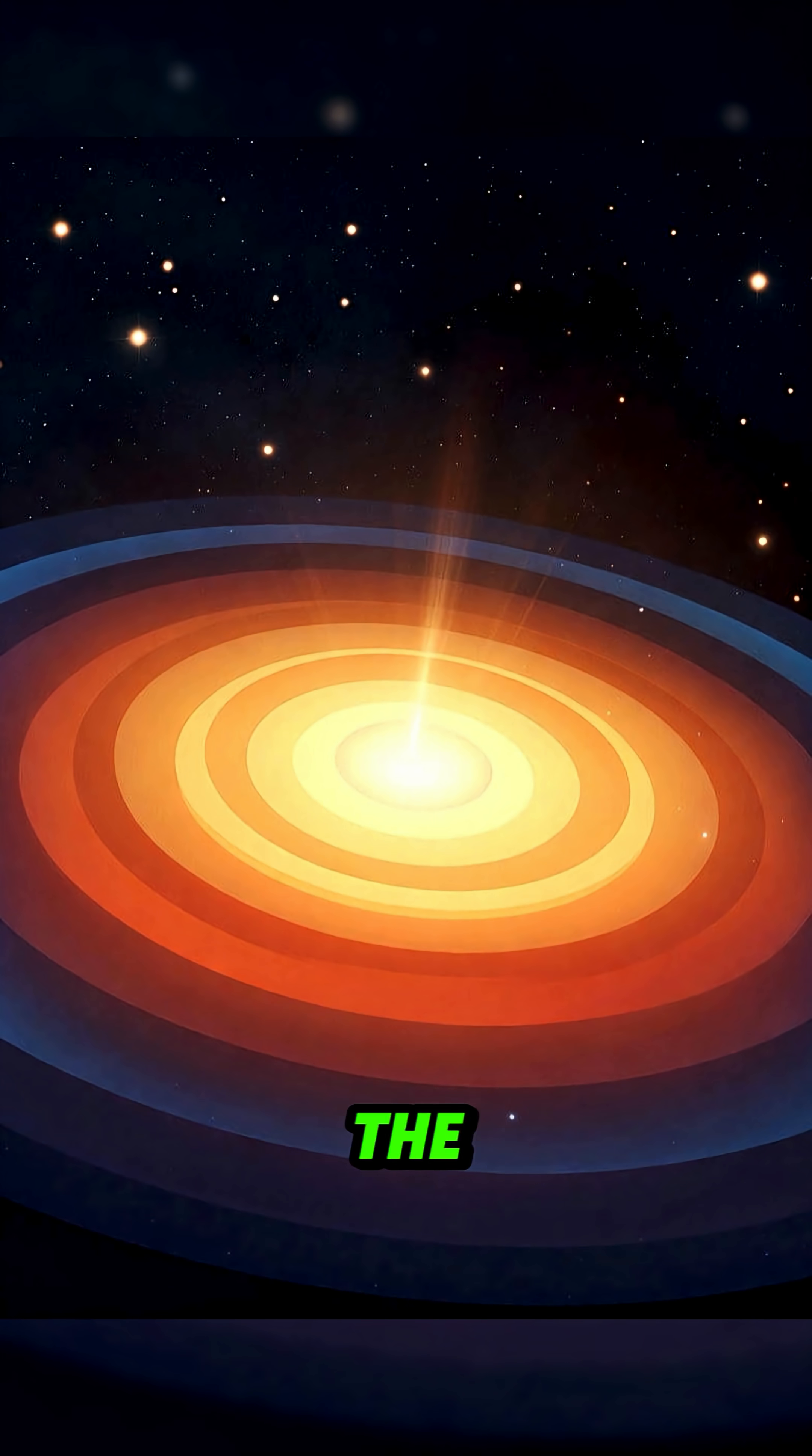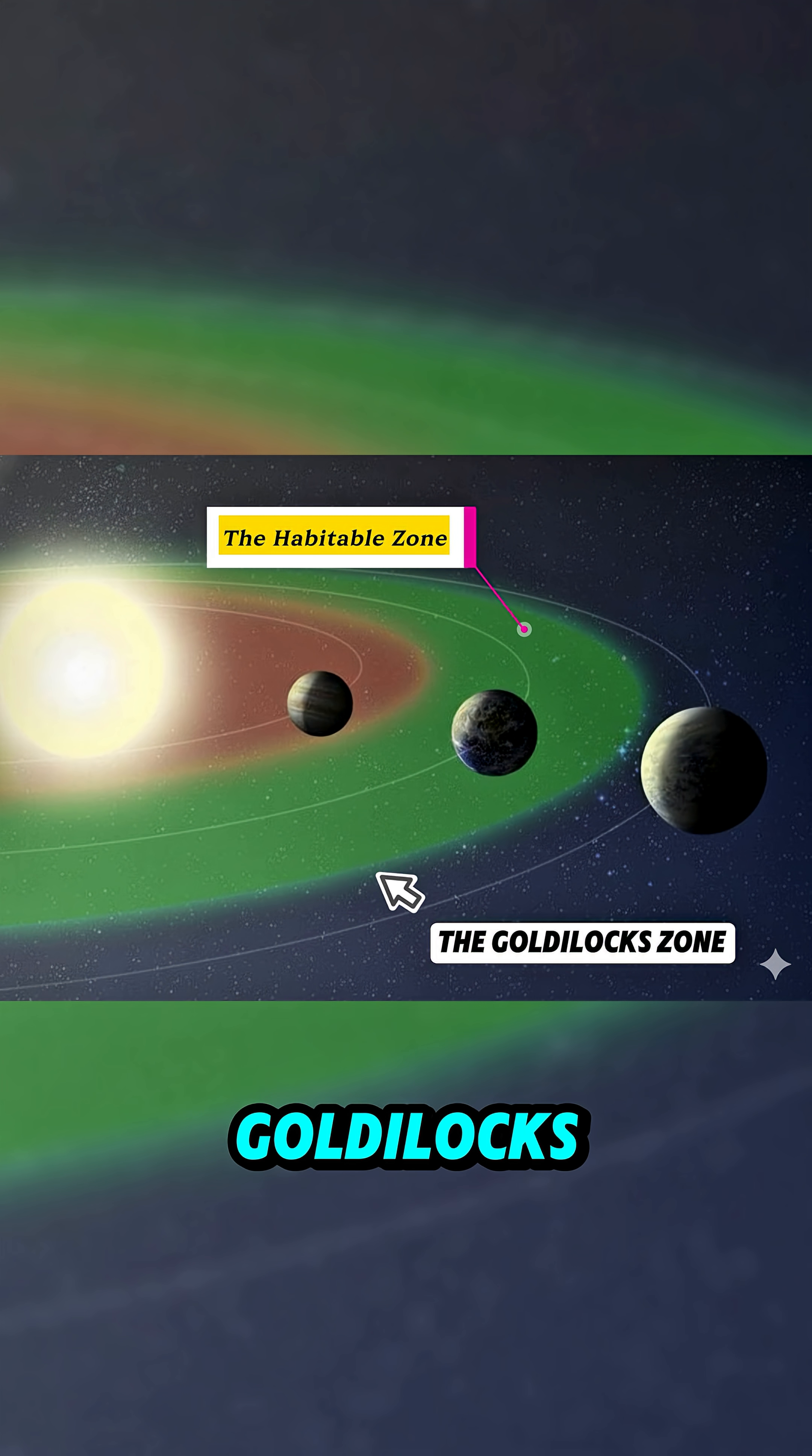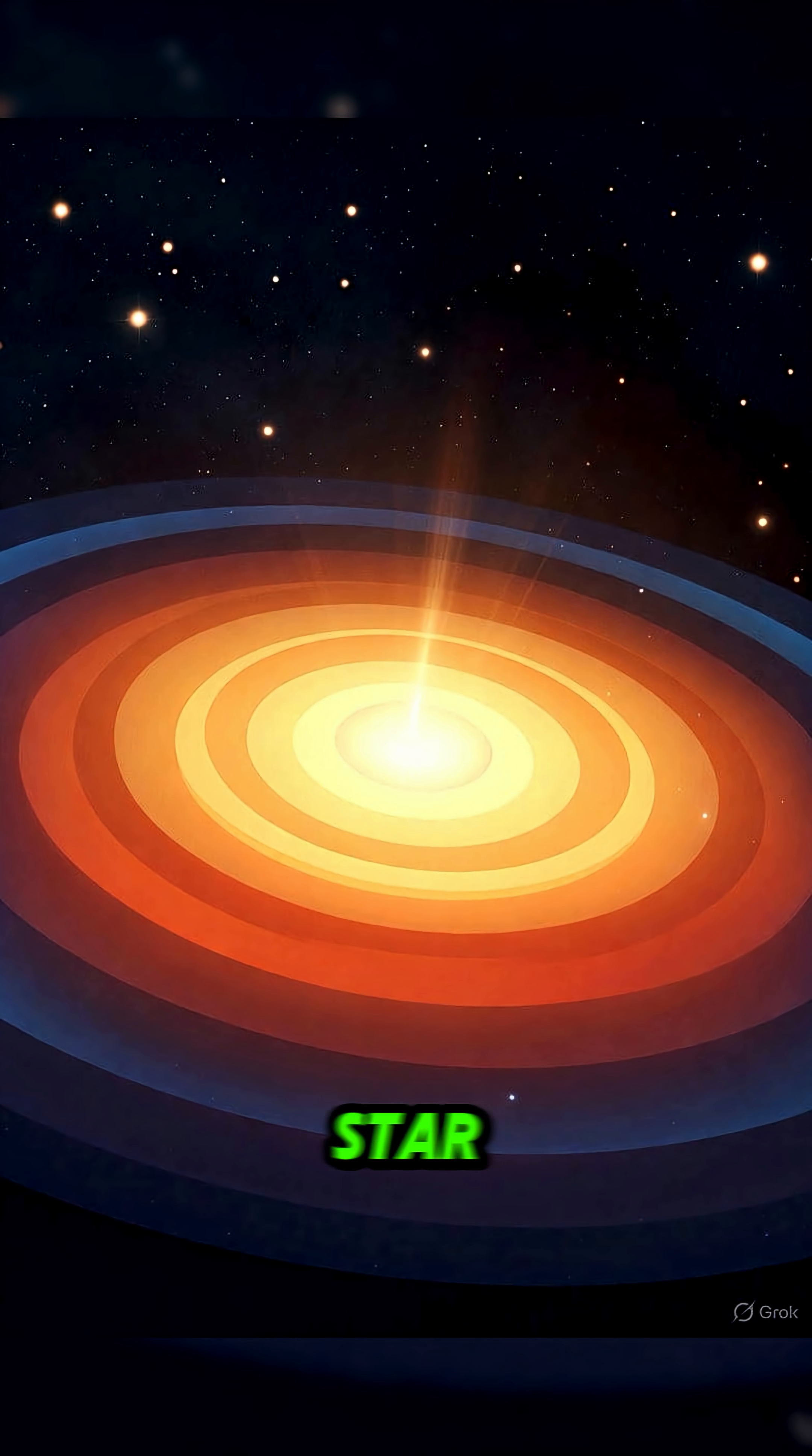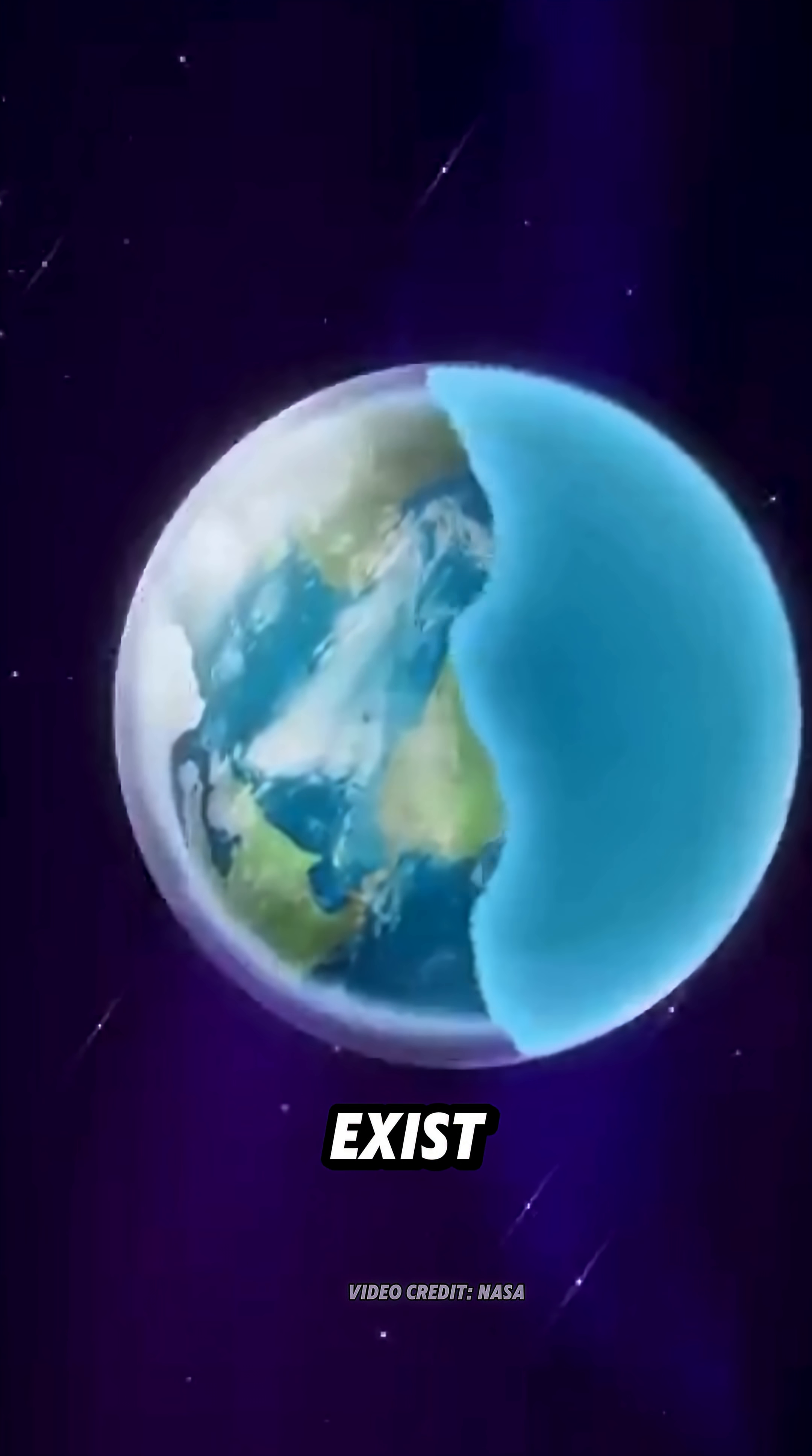Scientists believe the answer lies in something called the habitable zone, also known as the Goldilocks zone. This is the region around a star where conditions are not too hot, not too cold, but just right for liquid water to exist.